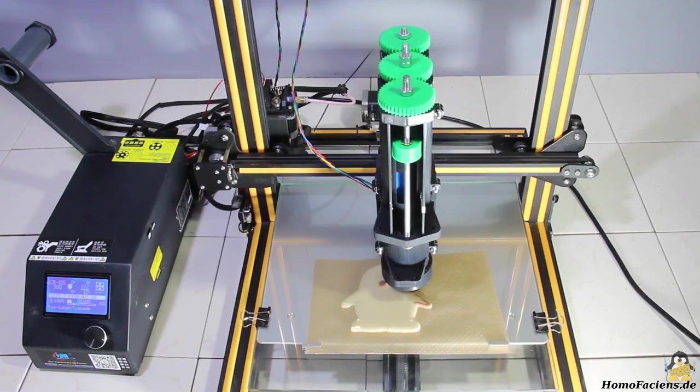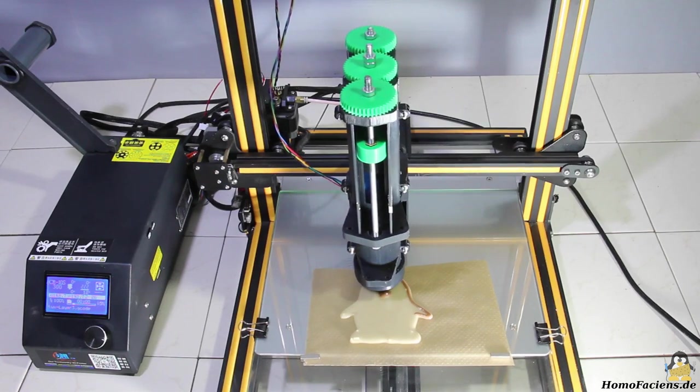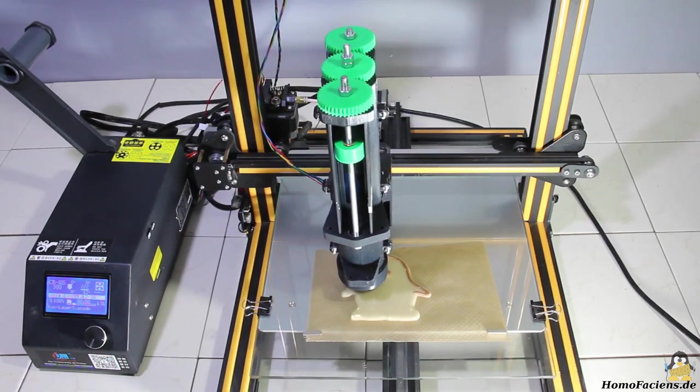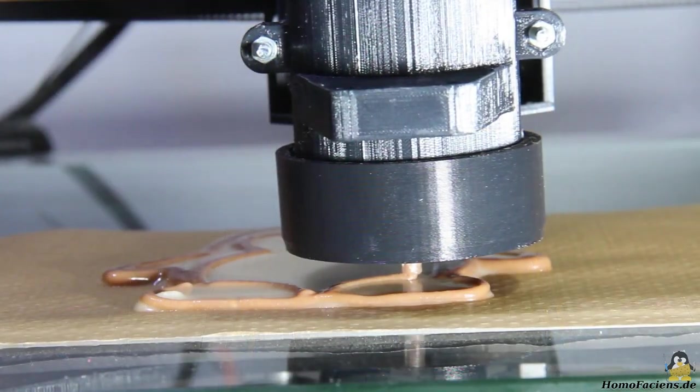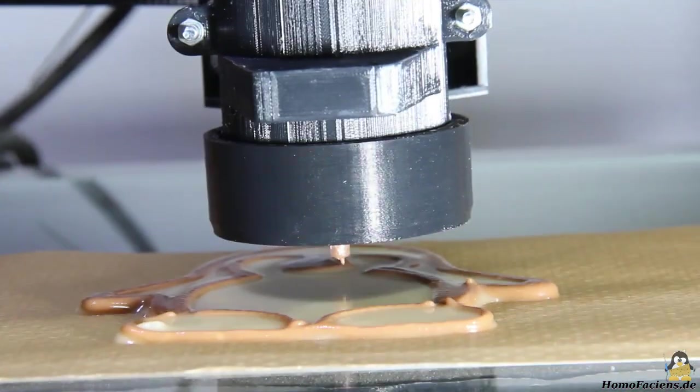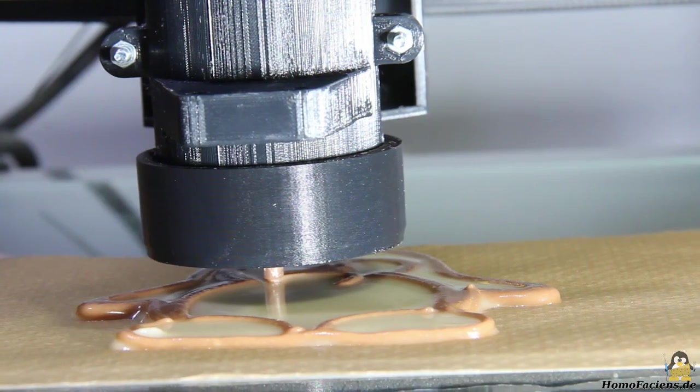I have added some melted chocolate to my recipe for the second layer to do a two-color print. With the chocolate, the dough becomes even more fluid, which makes it easier to extrude, but also causes the dough to keep flowing after extrusion.